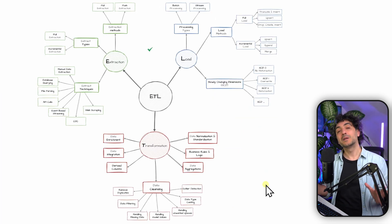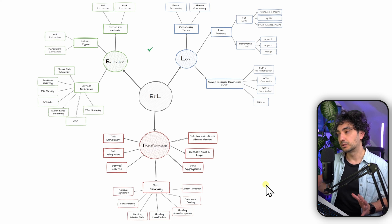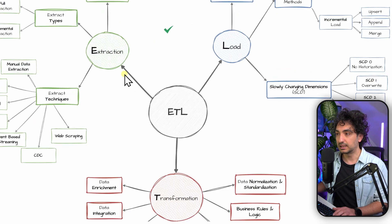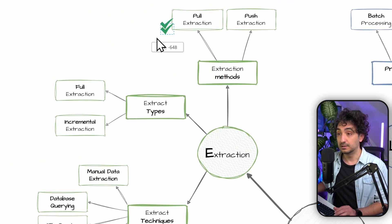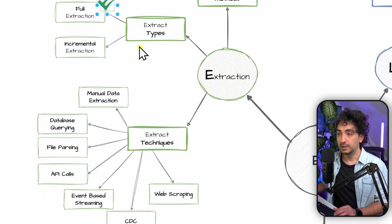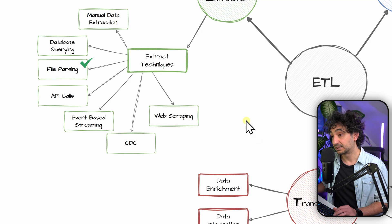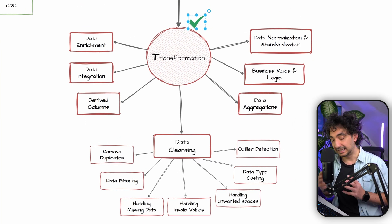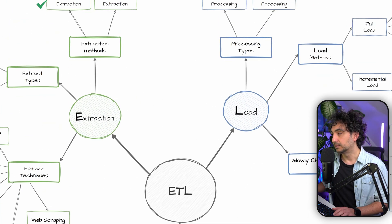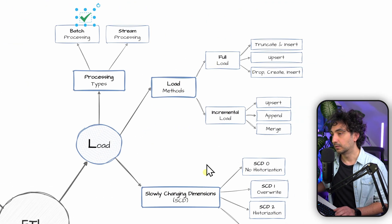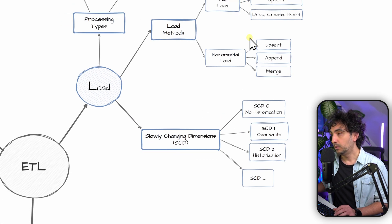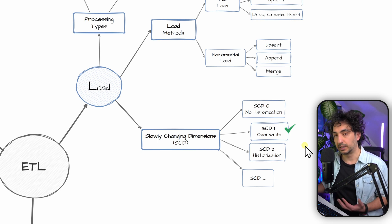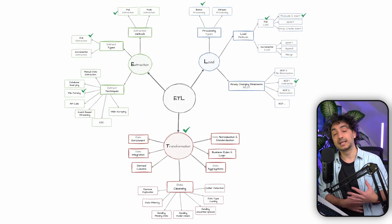Now let's look at what we will use in our specific project. For extraction: pull method, full extraction, parsing files. For transformations: we will cover all the transformation types shown, as they appear in every real data project. For load: batch processing, full load using truncate and insert. For historization: SCD Type 1 — overwrite — meaning we update the content of the data warehouse with new source data.